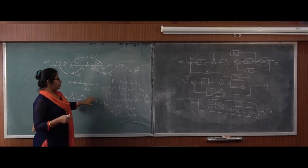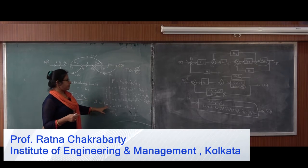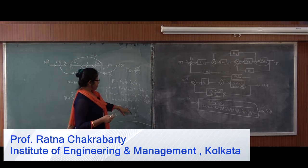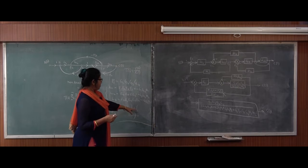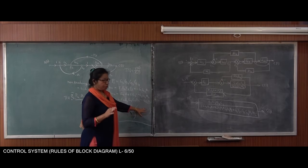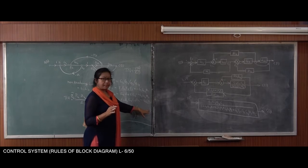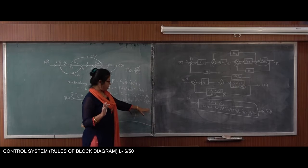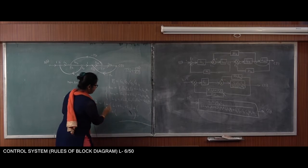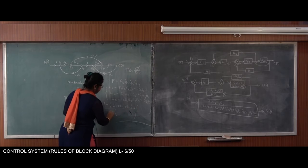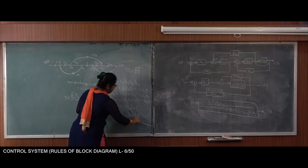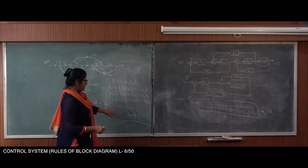Delta is 1 minus sum of all individual loop gains, plus sum of product of two non-touching individual loops. The sign will alternate: 1 minus, then plus, then minus, then plus.